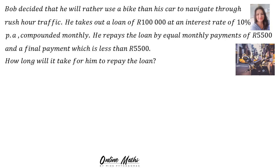Bob decided that he would rather use a bike than his car to navigate through rush hour traffic. He takes out a loan of 100,000 Rand at an interest rate of 10% per annum compounded monthly to pay for the bike. He repays the loan by equal monthly payments of 5,500 Rand and a final payment which is less than 5,500 Rand. How long will it take for him to repay the loan?